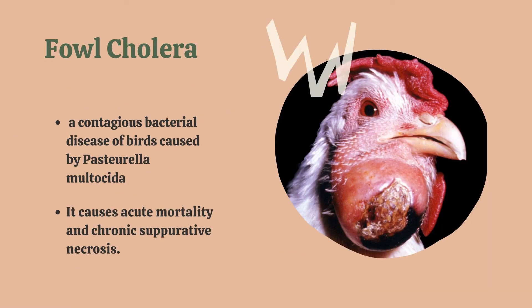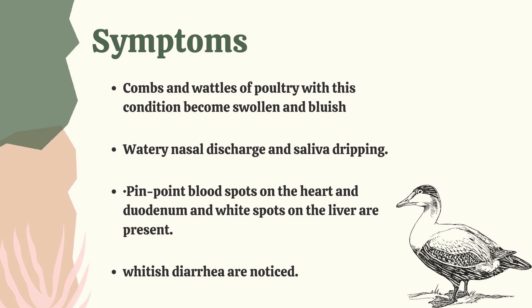Fowl cholera is a contagious bacterial disease of birds caused by Pasteurella multocida. It causes acute mortality and chronic operative necrosis. Symptoms include combs and wattles that become swollen and bluish, watery nasal discharge and saliva dripping, pinpoint blood spots on the heart and duodenum, white spots on the liver, and whitish diarrhea.